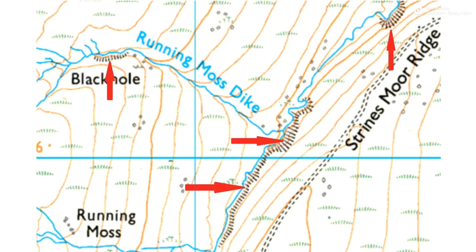Some people suggested that they might be rocks or cliff faces or scree, but the Ordnance Survey map has its own symbols for those, so that's not the case. Other people suggested it's an area of steep ground that can't be shown by the contour lines, but if we have a look on here we can see